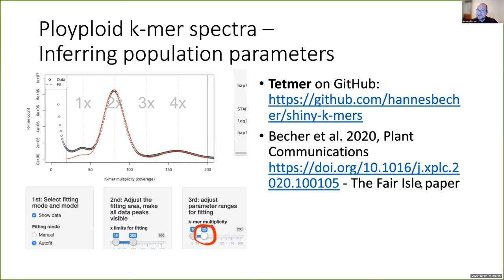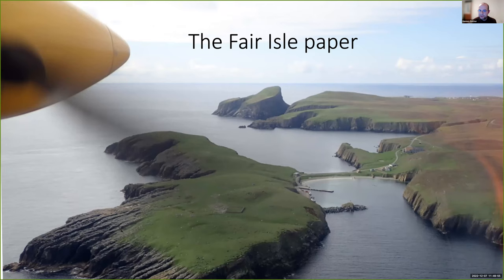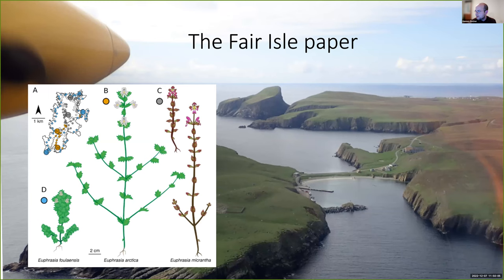Rather than just looking at the k-mer spectrum and saying this is plausible, I asked whether we can use k-mer spectra for inference. I came up with a mathematical expectation of the shape of the k-mer spectrum depending on heterozygosity and divergence between subgenomes, and developed an app called TETMA — an R Shiny app downloadable from GitHub — where you upload a k-mer spectrum, set parameter ranges, and either visually compare the fit or use automated fitting to spit out ideal parameters.